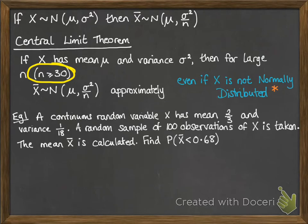Let's see how to use this. We've got a continuous random variable X with mean 2/3 and variance 1/18. A random sample of 100 observations of this variable is taken. This one is already starting as a continuous random variable, so we don't need to worry about a continuity correction here. We're going from something continuous into the normal, which is continuous.